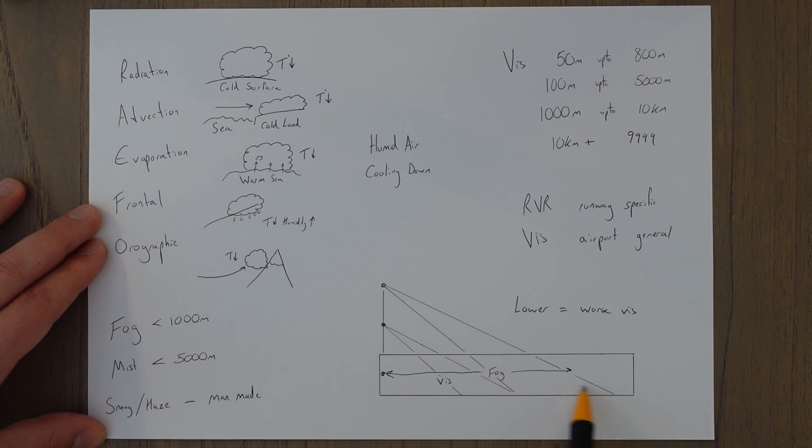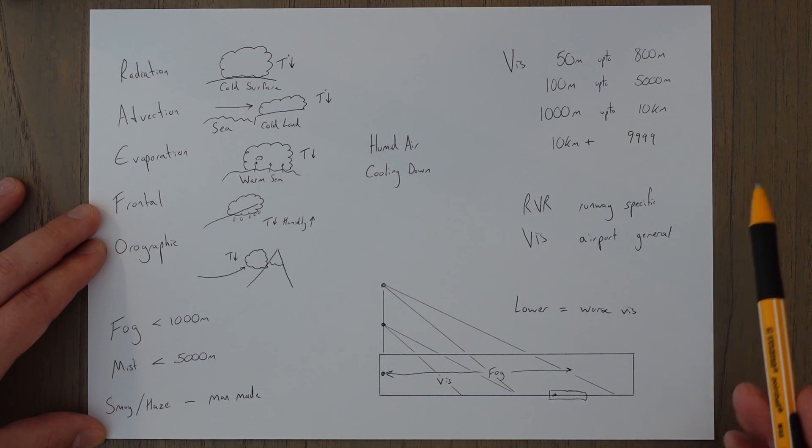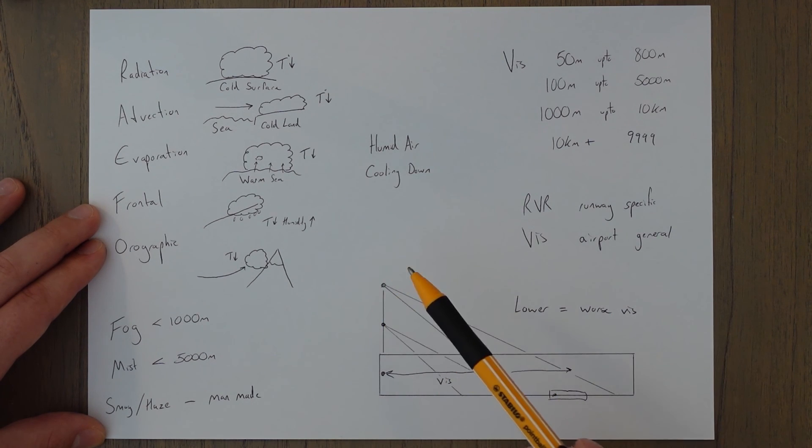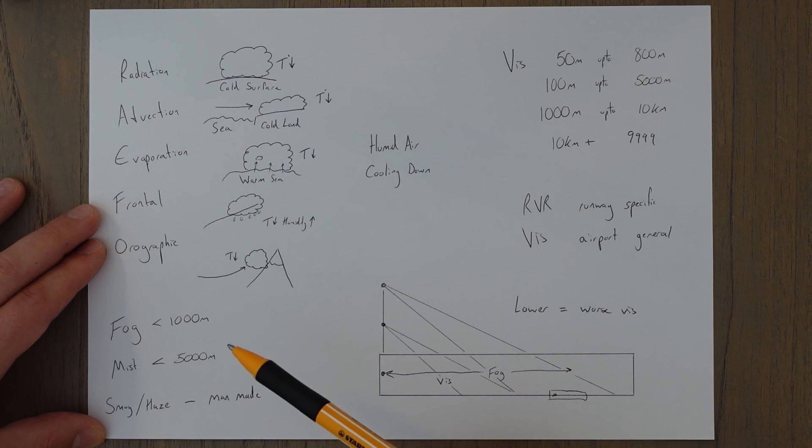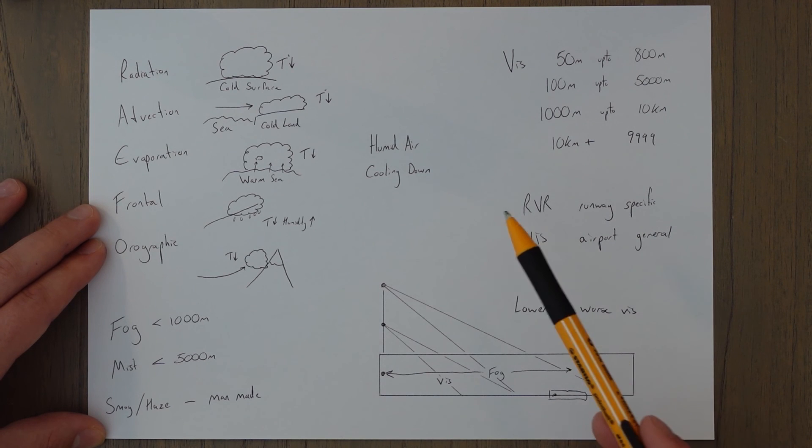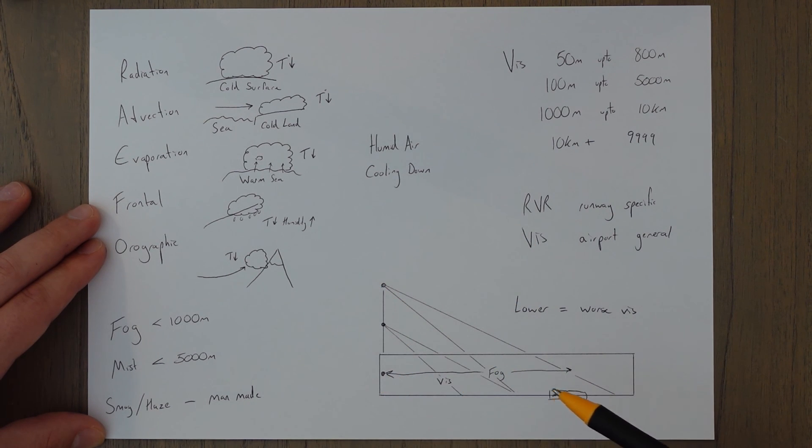And then you've got an important point to note is your visual segment. Basically the lower down you are the more of the fog or mist you're going to be looking through, so your visibility is going to be worse. Say you're aiming for a point, this is the runway here, you're aiming for the runway as you get lower and lower you're going to be looking through more and more of the fog as you come into land. So when the airport reports the visibility of 800 meters but you can see the runway from the cruise, this is the reason why. As you get lower and lower you're going to be looking through more of the fog as you come into land.